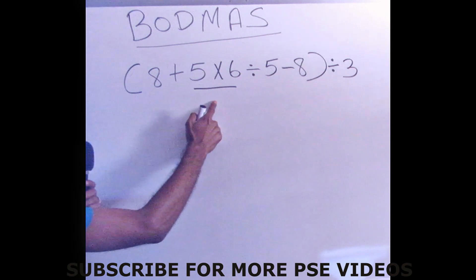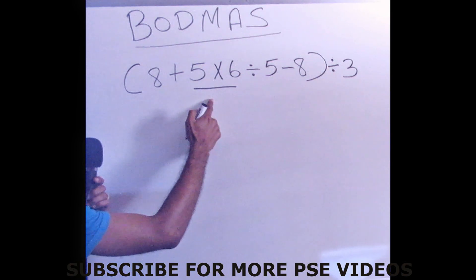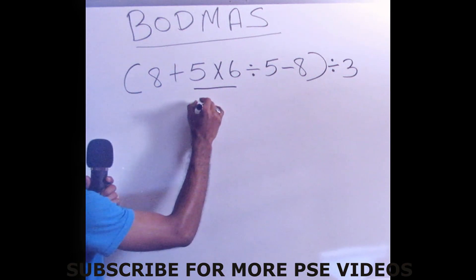Because remember, multiplication and division come before addition and subtraction, so we're going to multiply 5 times 6, of course it's 30.